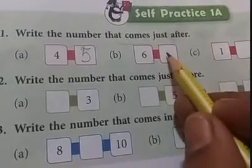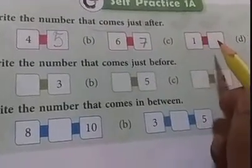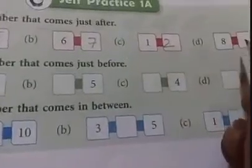And in B, after 6 which number has to come? I know everybody knows the number is 7. And after the 1 it should be 2. And after 8 it should be 9.